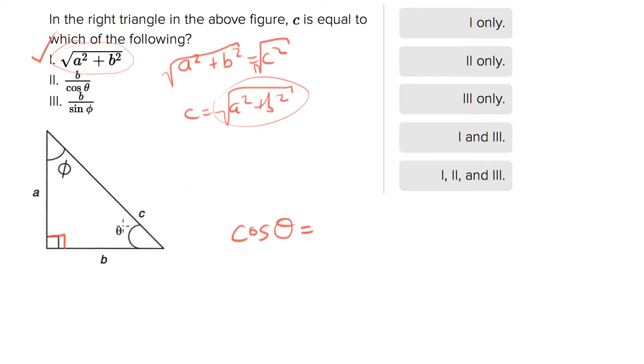So the definition of the cosine of an angle when it comes to a triangle is equal to the adjacent side over the hypotenuse. So that would be equal to b over c. Now, just like with the Pythagorean Theorem, we really want to solve this for c.